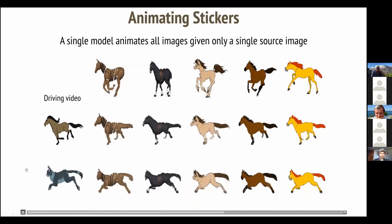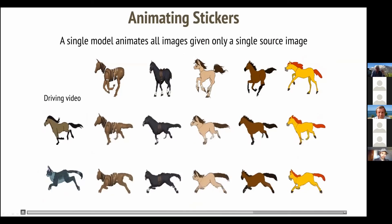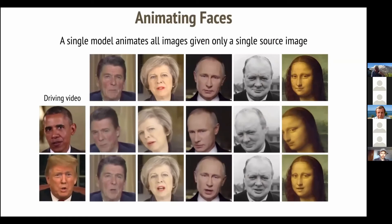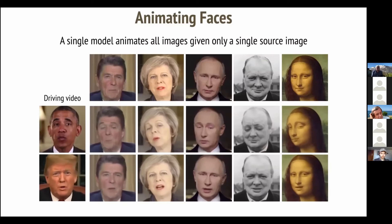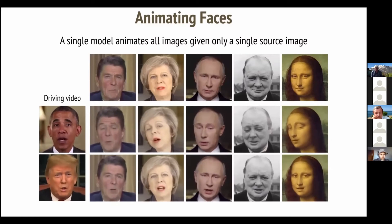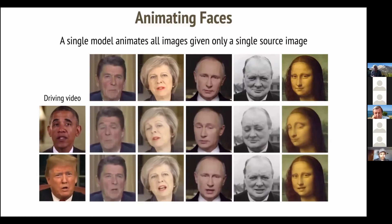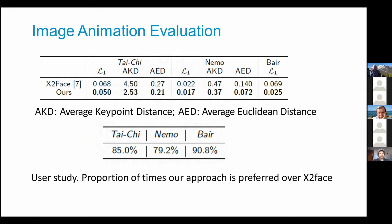You have different driving videos and different objects being animated with this approach. For example, a cat's motion animating a horse — it doesn't matter, it works pretty well. Going back to faces, you can animate Obama, Trump, Mona Lisa, and others to do the same type of movements. Note that with very strong head poses you get some distortion. In evaluation, our method performs better in both average keypoint distance and average Euclidean distance, and users preferred our method over competitors in a user study.